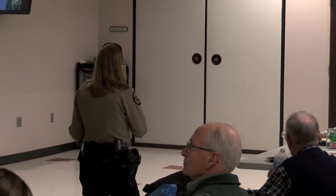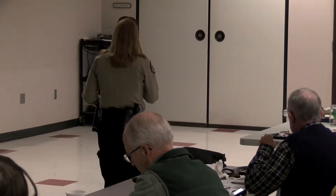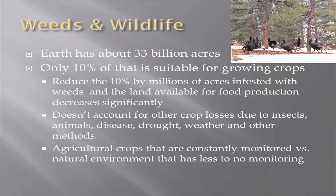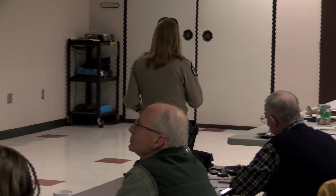Leafy spurge can decrease the carrying capacity by up to 50% — that's pretty big. Looking at the big picture: Earth has about 33 billion acres, and only 10% of that is suitable for growing crops. If you reduce that 10% by millions of acres infested with weeds, the land available for food production decreases significantly.